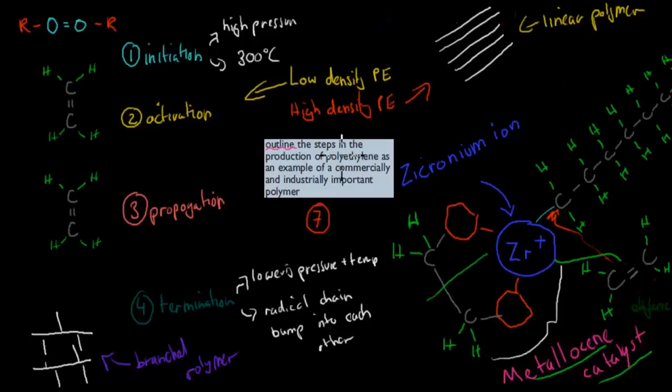Outlining steps in the production of polyethylene as an example of a commercially and industrially important polymer. That was video 7. For low density, this is low density polyethylene, what I'll describe first. We had a peroxide radical, which was first neutral. But then we had the initiation stage. First stage was initiation. High pressure and 300 degrees Celsius broke one of these bonds.